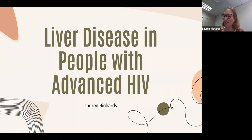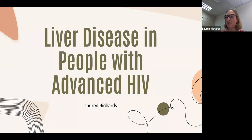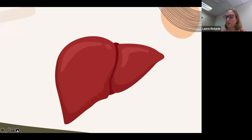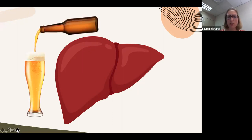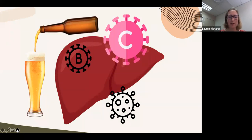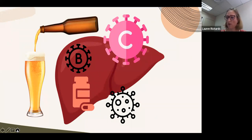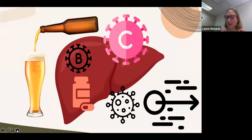Liver disease is a huge cause of morbidity and mortality in people living with HIV. In some studies it has been identified as the leading cause of non-AIDS mortality, and it's often overlooked in sub-Saharan Africa. The etiology in this population is complex and may overlap in the same individual. Alcohol, HIV itself, hepatitis C, hepatitis B, and medications including ART are just some of the causes, and the progression of liver fibrosis is accelerated in HIV-infected individuals.